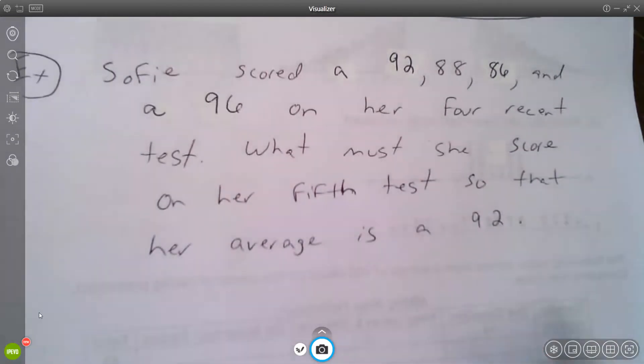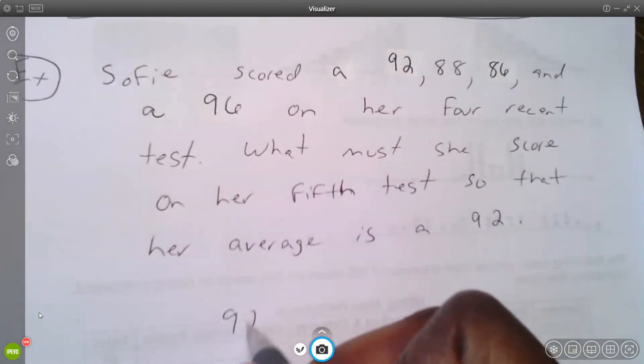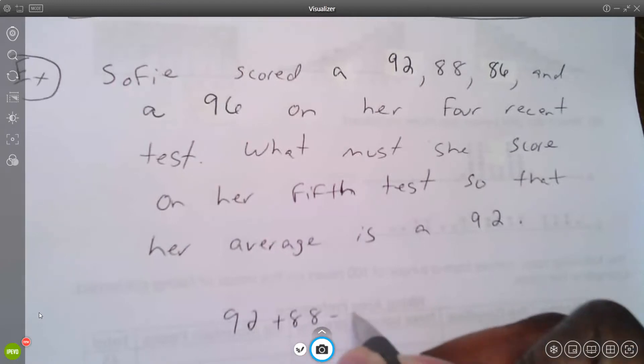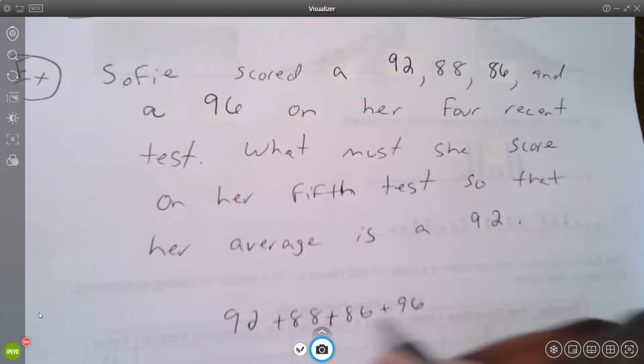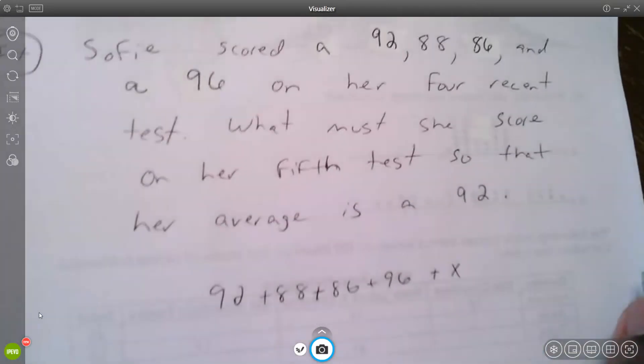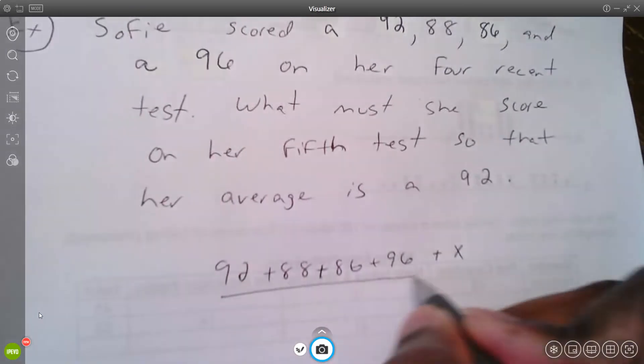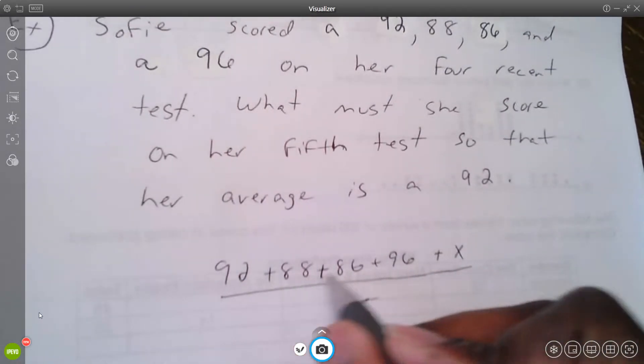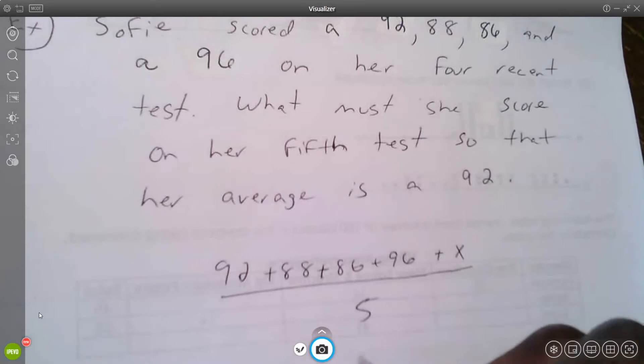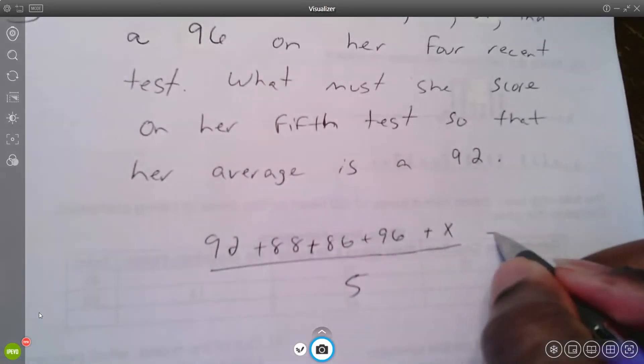So in order to write the equation for it, you basically take all the numbers that you do know: 92, 88, 86, 96, and the fifth test score you don't know, so we call it x. We need to take all those numbers and divide it by five because you got five test scores. Now that average should give you 92, so that's the equation I write that allowed me to solve for x.